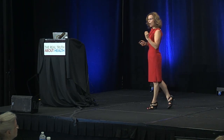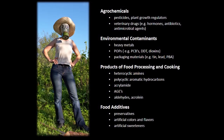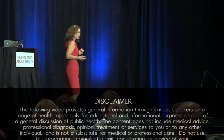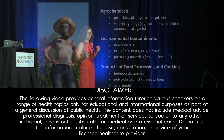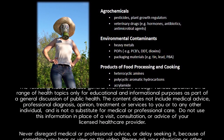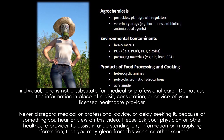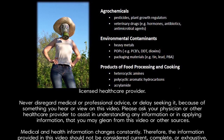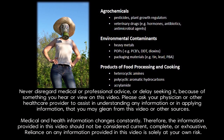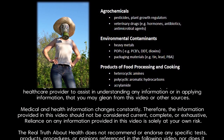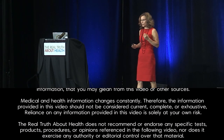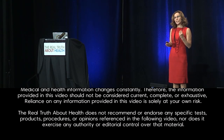Step 9 is to minimize harmful chemical residues in foods. We want to minimize agrochemicals — the pesticides, herbicides, plant growth regulators, veterinary drugs like hormones and antibiotics, antimicrobial agents used on imported fish like malachite green, environmental contaminants including heavy metals and persistent organic pollutants, packaging materials like BPA, products of food processing and cooking like heterocyclic amines, polycyclic aromatic hydrocarbons, acrylamide, advanced glycation end products, aldehydes like acrolein formed from cooking fat, food additives, preservatives, colors, flavors, and artificial sweeteners.